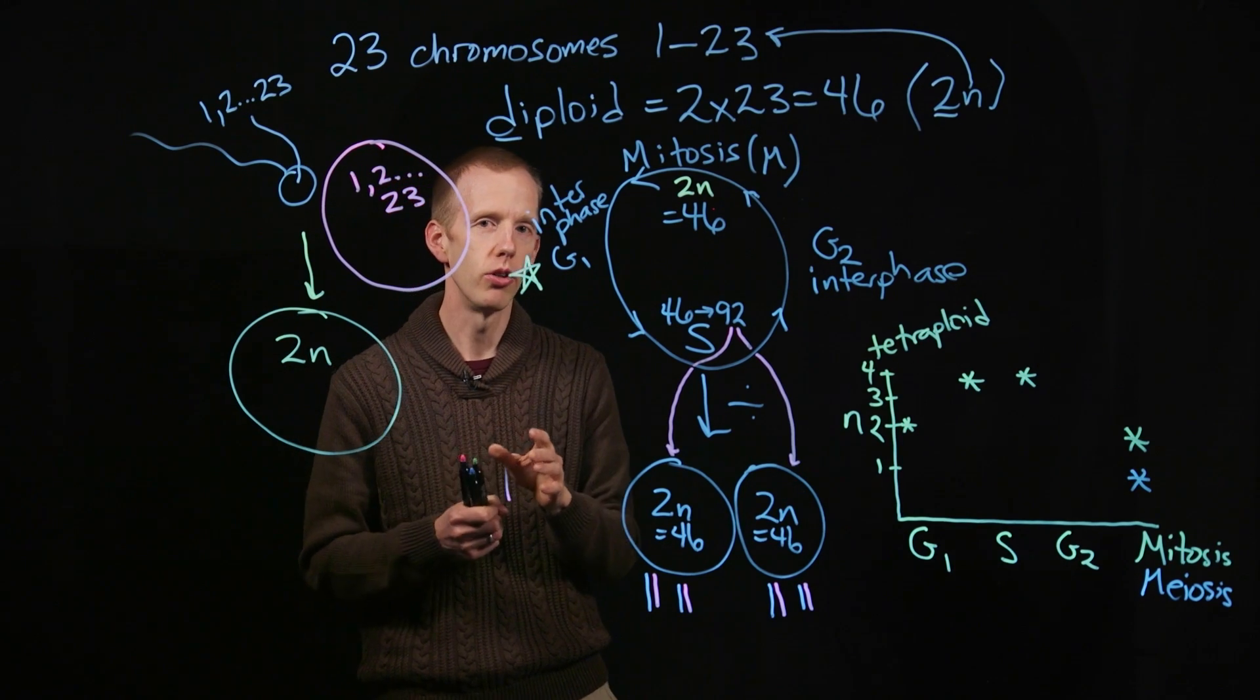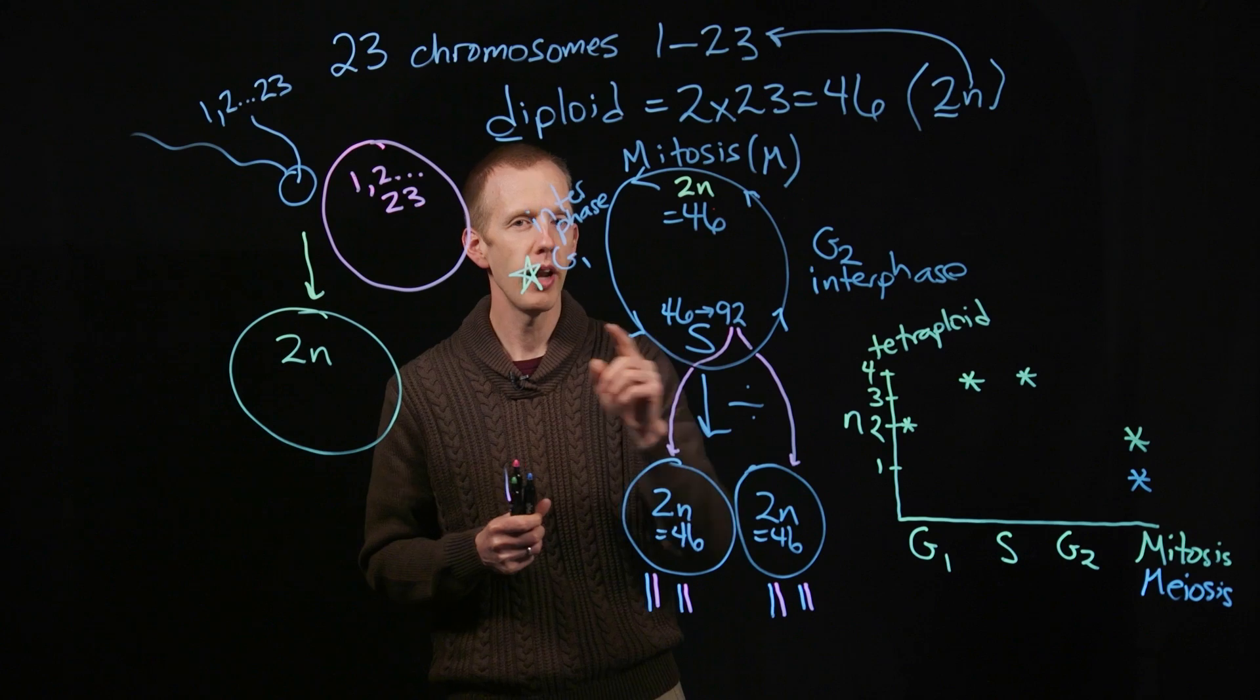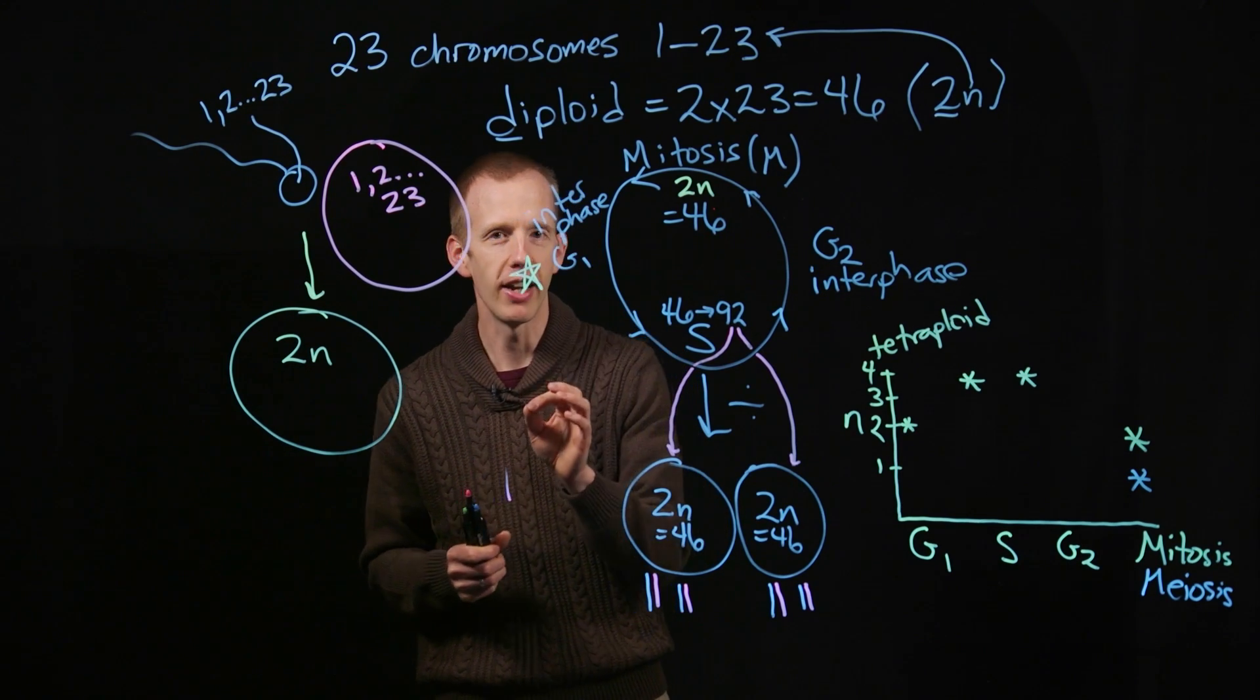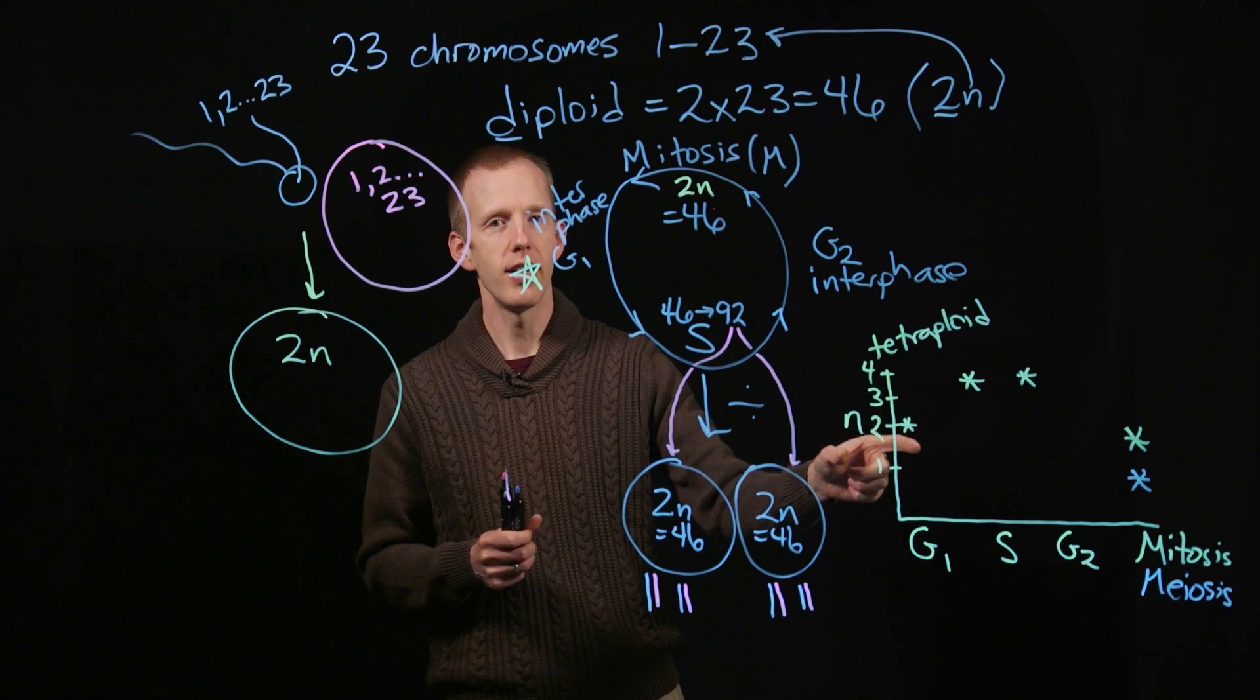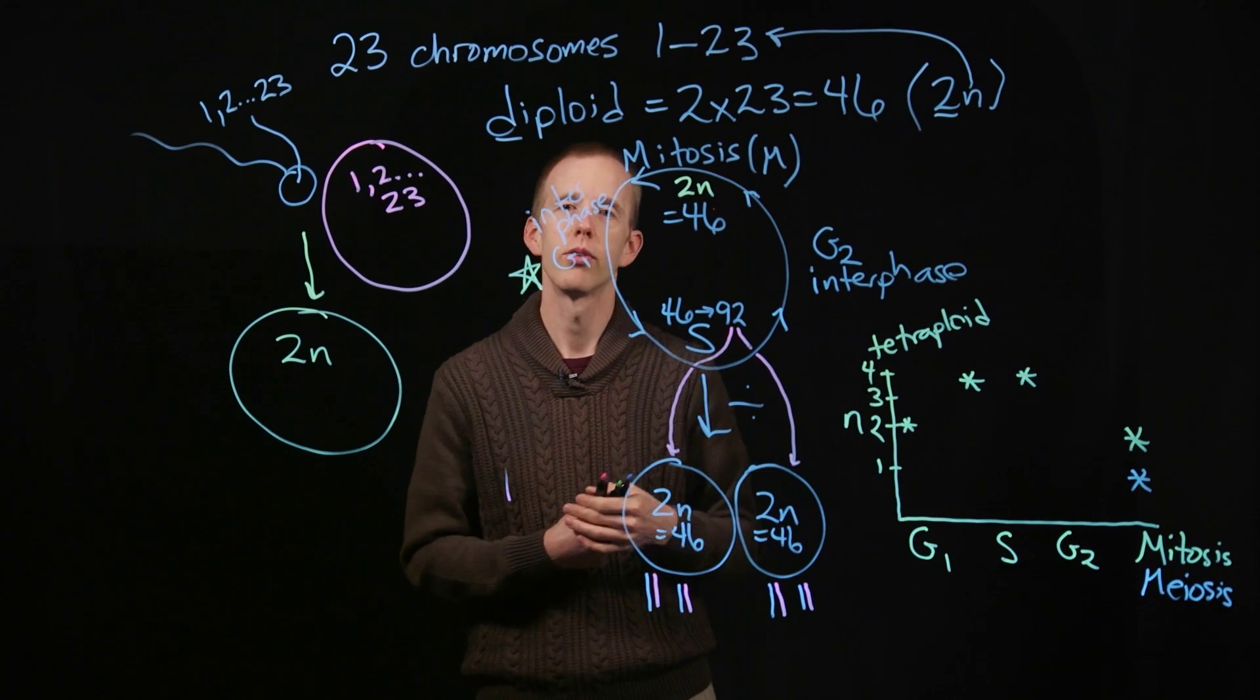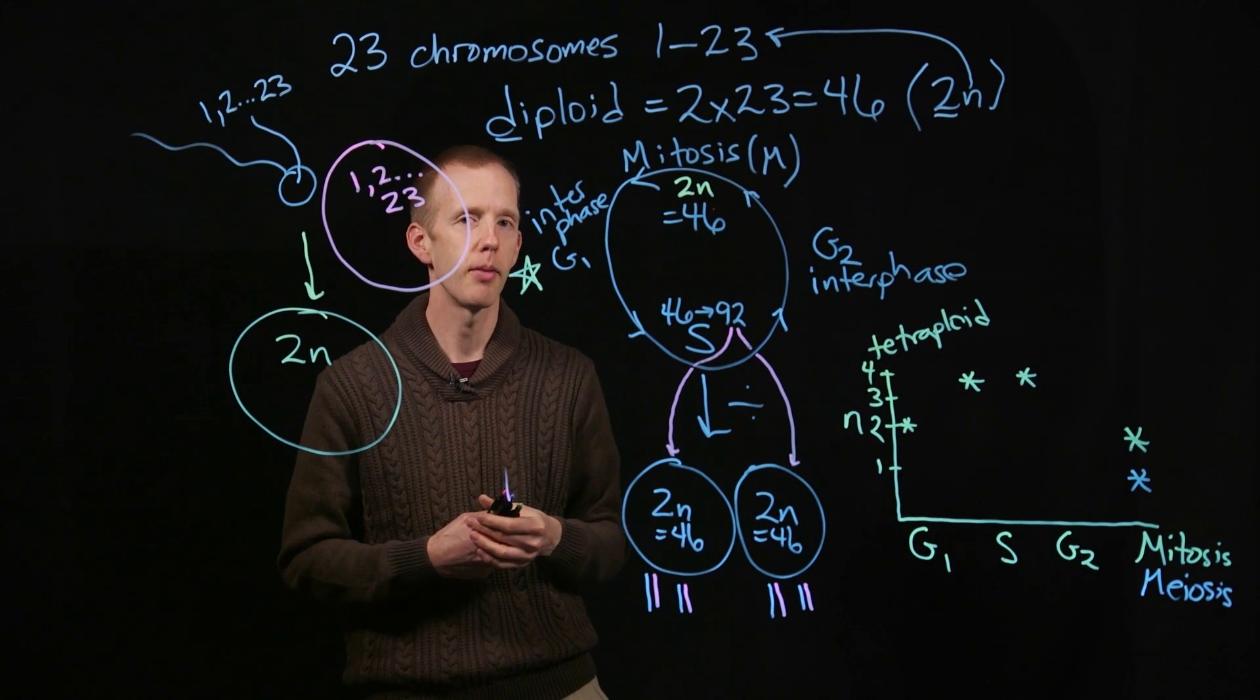What I'd like you to do for next class is to produce the same chart, but what would happen if you were defined by geneticists to be a tetraploid organism? Draw its ploidy chart according to its phase in the cell cycle, and bring that to class with you next time.